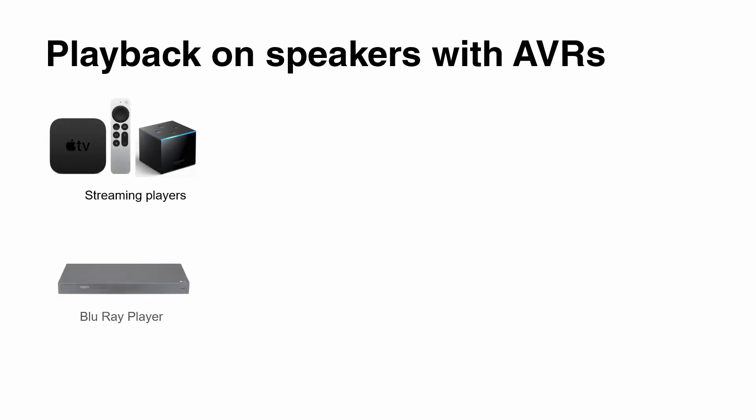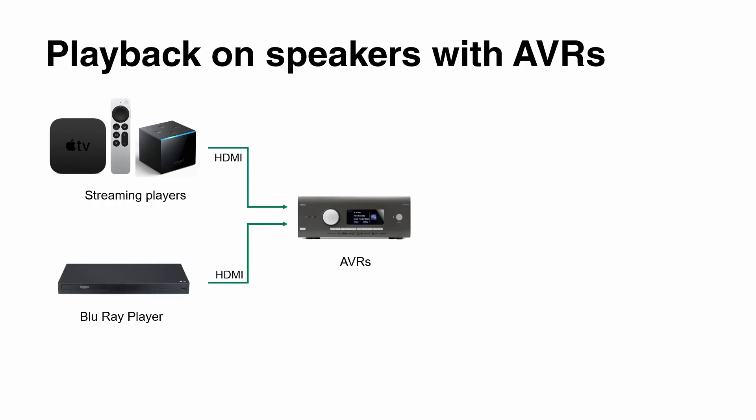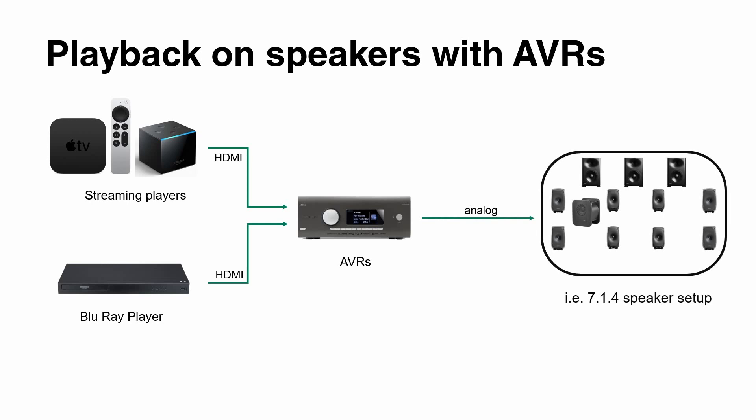Let's have a closer look at how to play back immersive audio content at home with physical real speakers and an AVR in the signal path. It starts with your streaming player or your Blu-ray player. By default, every Blu-ray player is immersive audio ready when it comes to Dolby Atmos. Many discs also support Auro 3D, and DTS-X is also an immersive audio format found on many Blu-rays. These devices connect over an HDMI cable to your AVR, and you can connect a 7.1.4 physical speaker setup — shown here with active Genelec speakers.